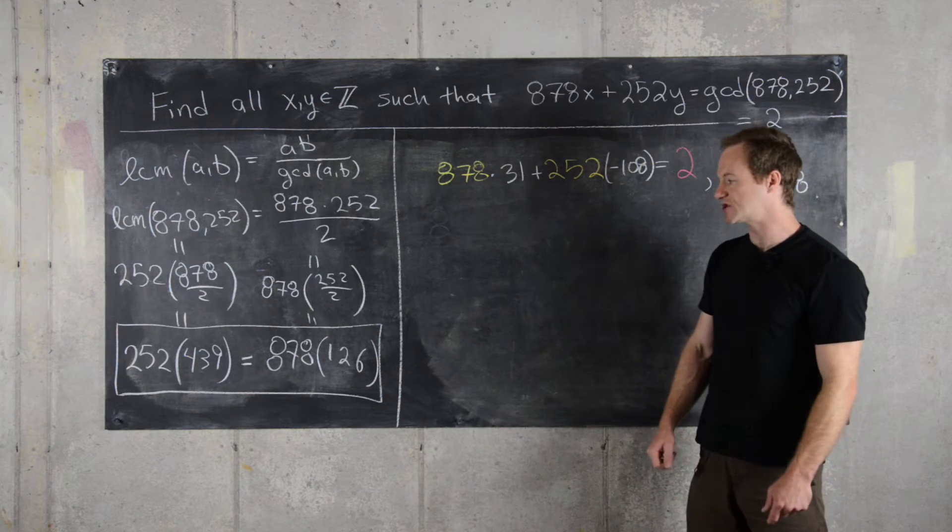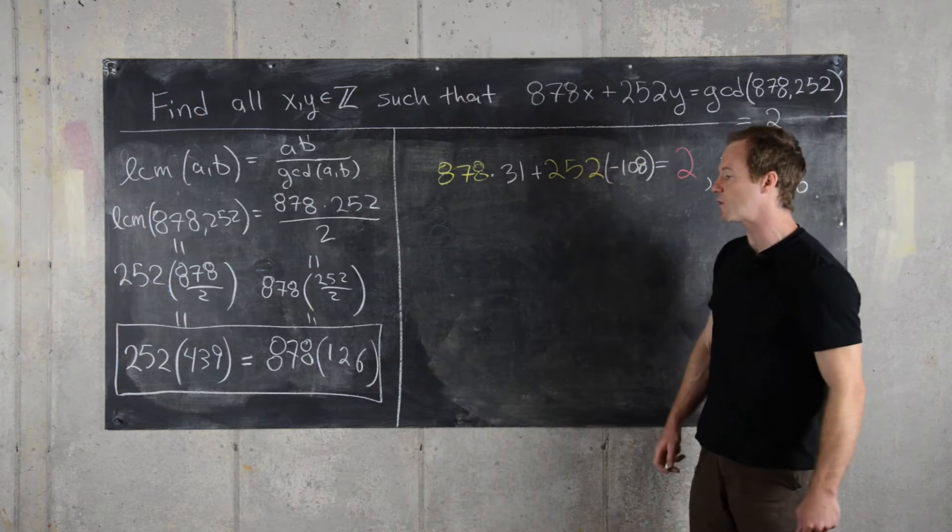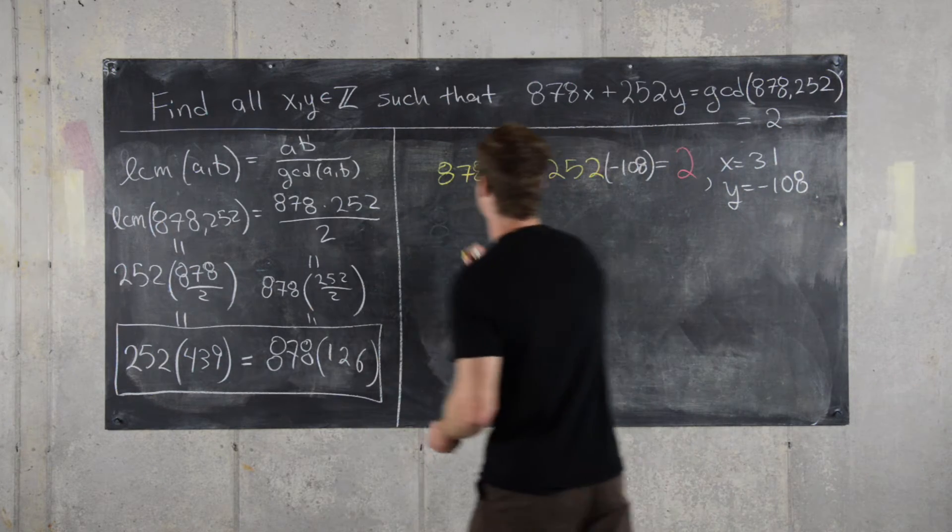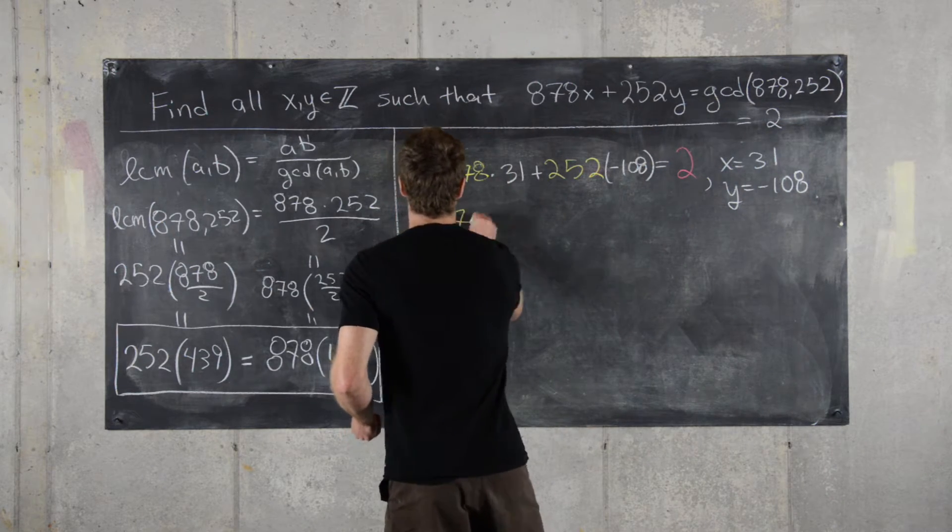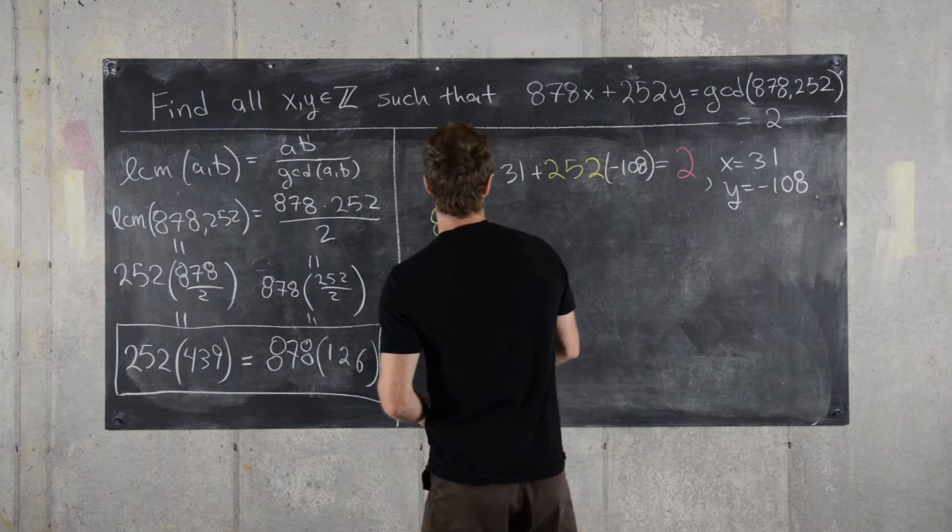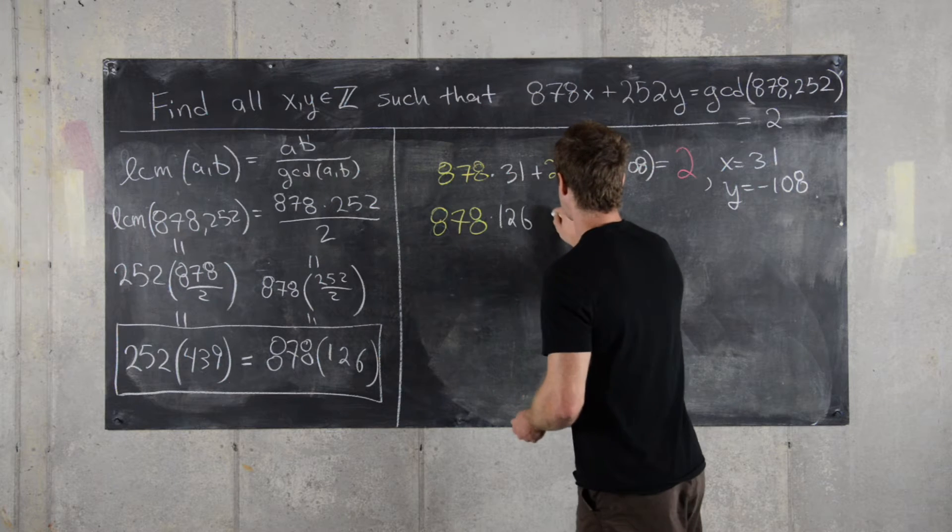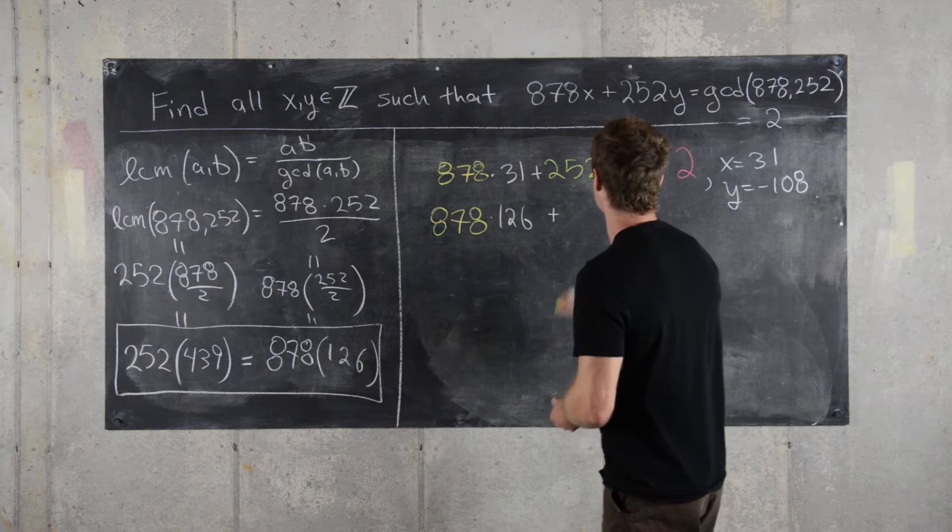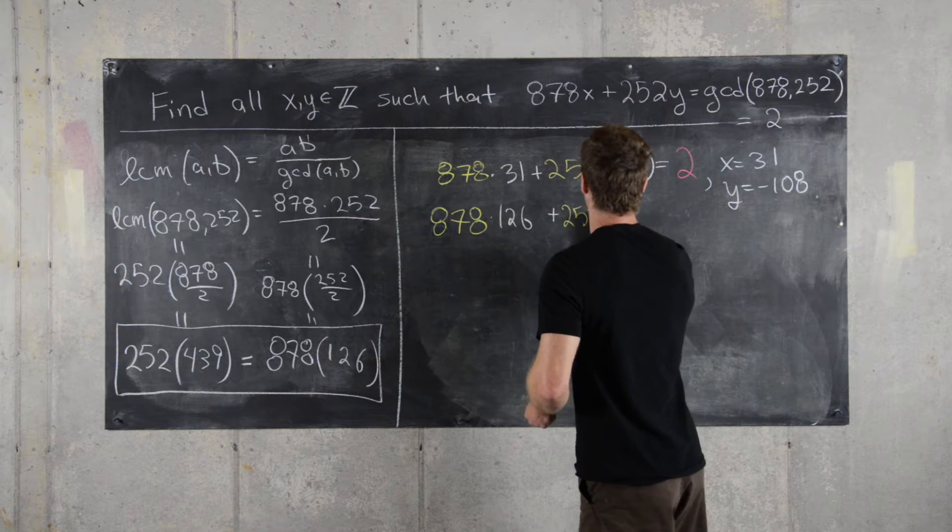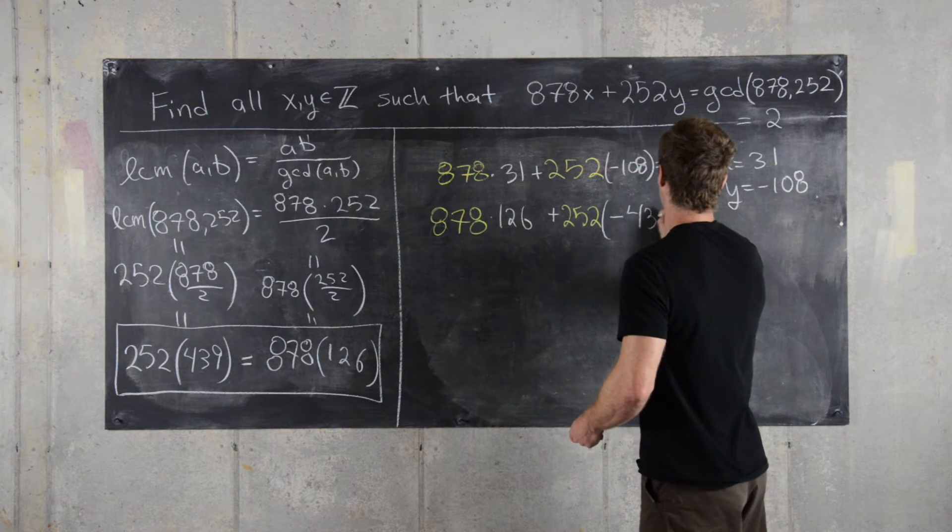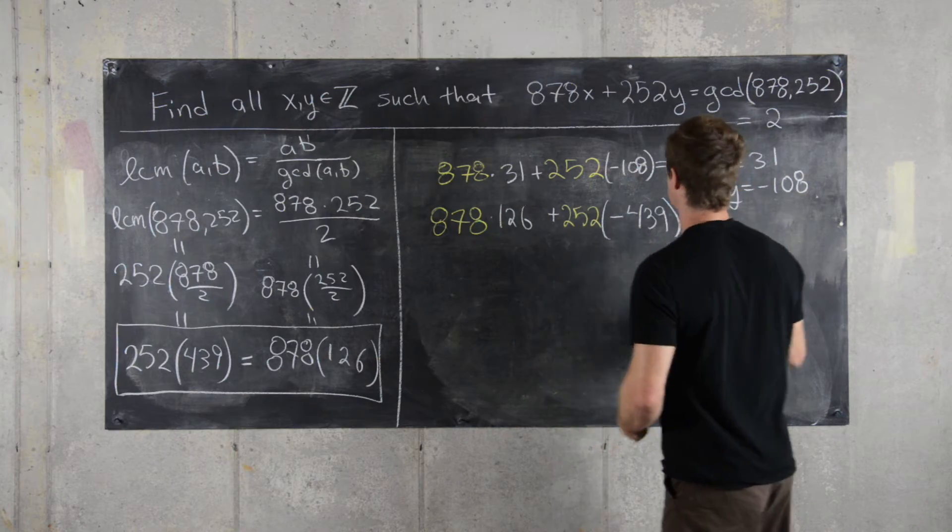So if each side, or if that is an equation, then that means we can rearrange it to give ourselves 878 times 126 plus 252 times negative 439 equals 0.